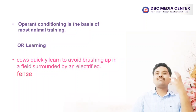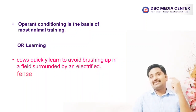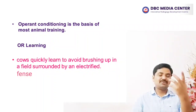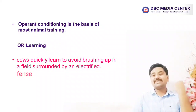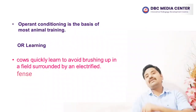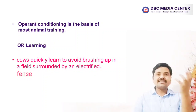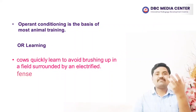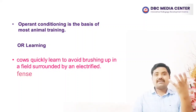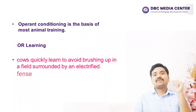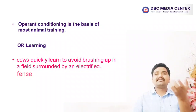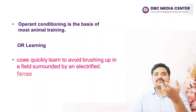Operant conditioning is the basis of most animal training. For example, you might give your dog a biscuit or say 'good dog' every time it rolls over or refrains from barking. On the other hand, a cow in a field surrounded by an electric fence will quickly learn to avoid brushing against the fence. Operant conditioning through reinforcement can cause animals to engage in behaviors they would not otherwise perform, or to avoid behaviors that are normally part of their repertoire.